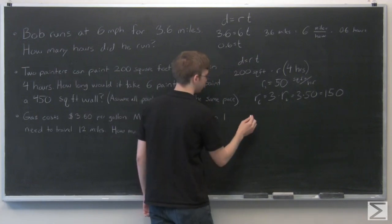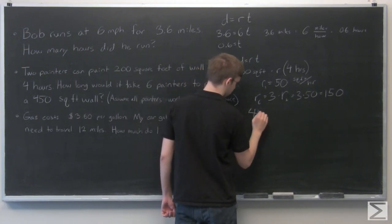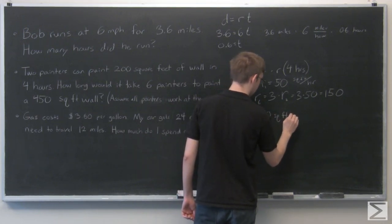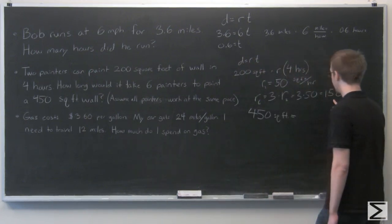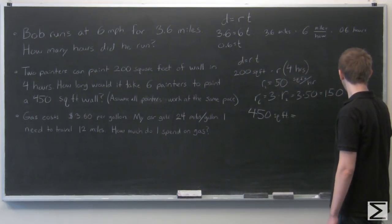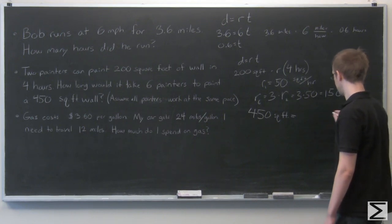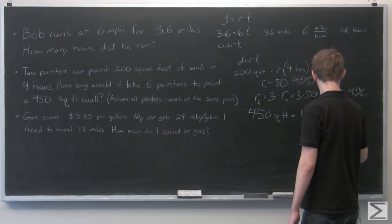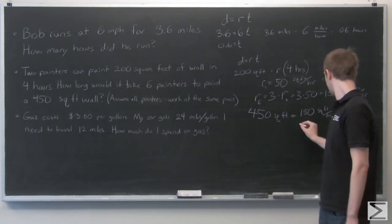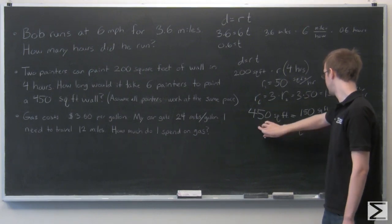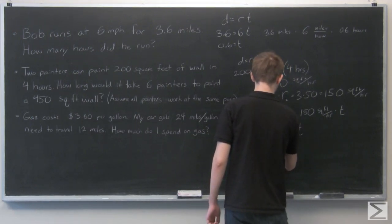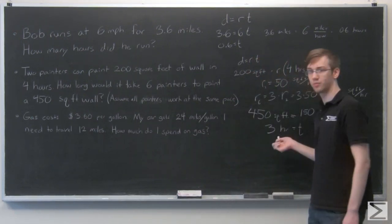Now go back to our rate formula to find out 450 square feet. So again, our distance is going to be the square feet we need to cover, and now we know our rate. It's 150 square feet per hour times time. Now we can just solve for time by dividing by 150. So 450 divided by 150 is 3. So our answer to that problem is three hours.